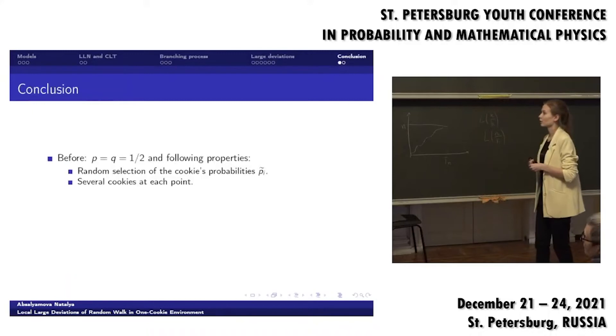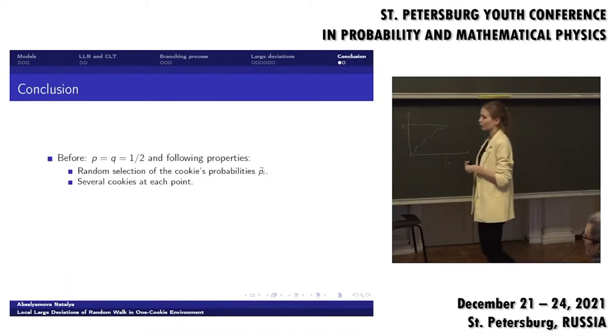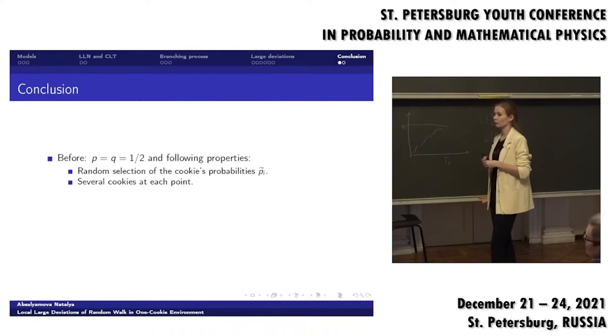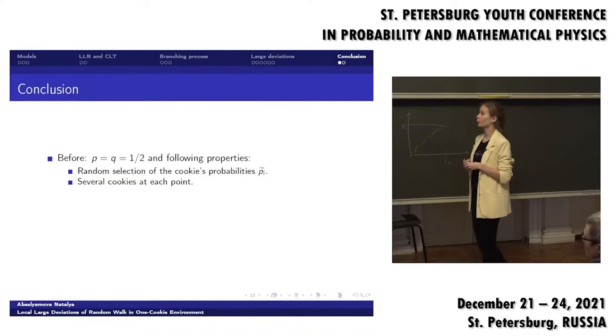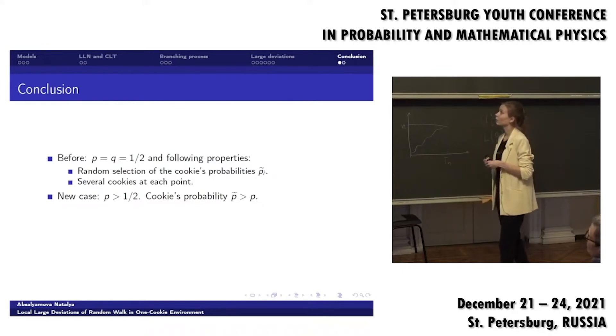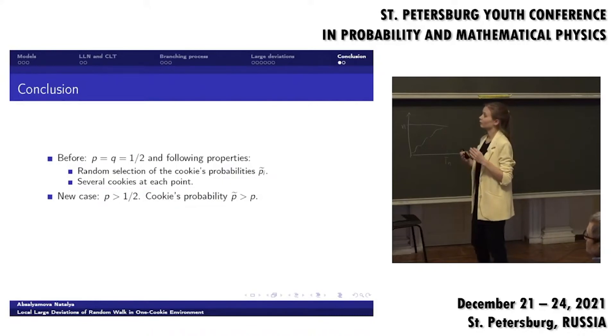Okay. In conclusion, I'd like to summarize previous results and new results. In previous works on random walk in cookie environment, there is always symmetric random walk without cookie and different types of cookies. In some papers there are more than one cookie, and in some papers there are different probabilities of cookie. The new case which I talked about was when just simple random walk was non-symmetric and the probability of our cookie was greater than p. And we established a theorem about large deviations.